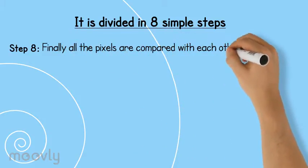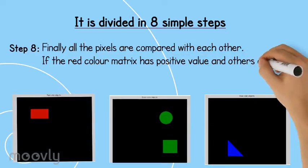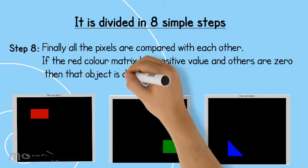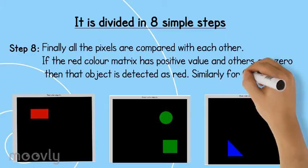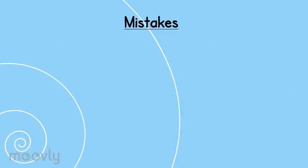Step 8. Finally, all the pixels are compared with each other. If the red color matrix has positive values and others are zero, then that object is detected as red. Similarly, for green and blue and each color is displayed separately.